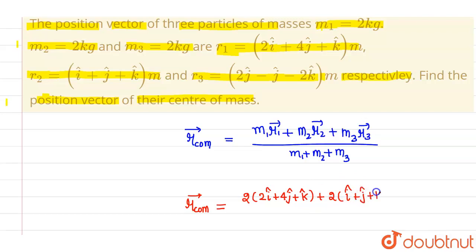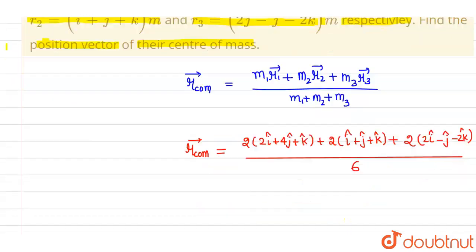plus 2kg times (2i cap - j cap - 2k cap), divided by total mass which is 6kg. So this is the position vector.